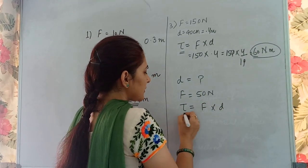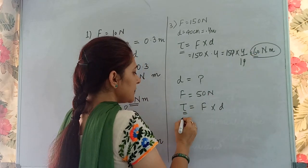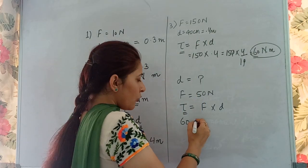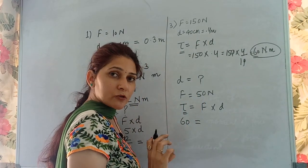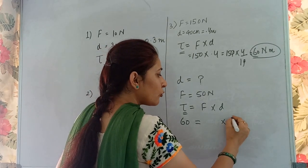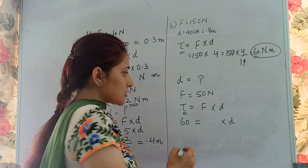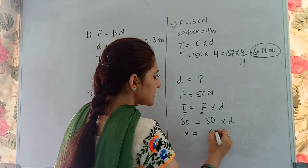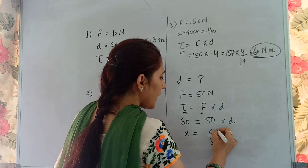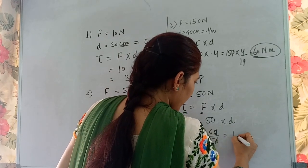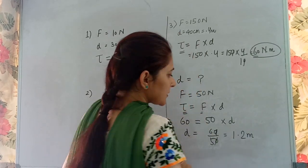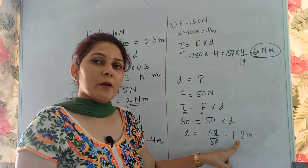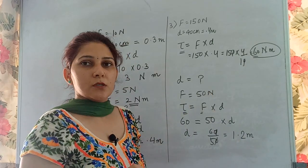Using torque = F × d: 60 = 50 × d, so d = 60/50 = 1.2 meters. When the mechanic applies force at 1.2 meters from the pivot, the force needed is reduced to 50 newtons.